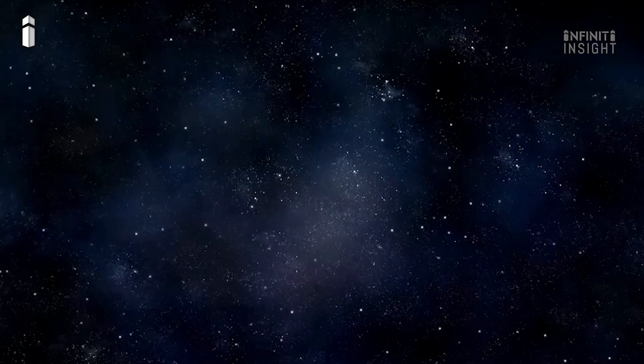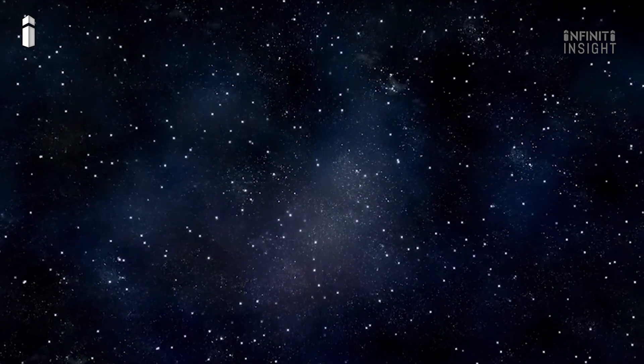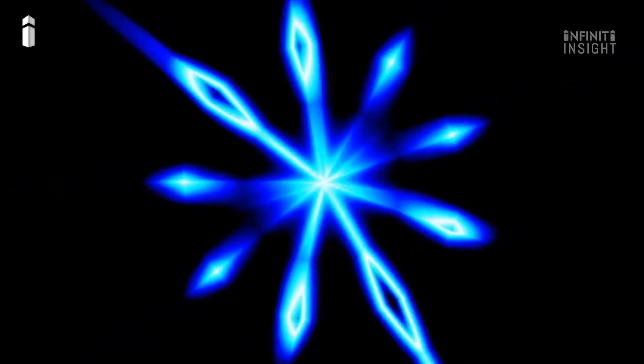The trouble is, no one's ever seen a wormhole before. And we probably won't find one anytime soon. The other problem is if wormholes do exist in our solar system, they're probably microscopic. We aren't even sure how they would form.